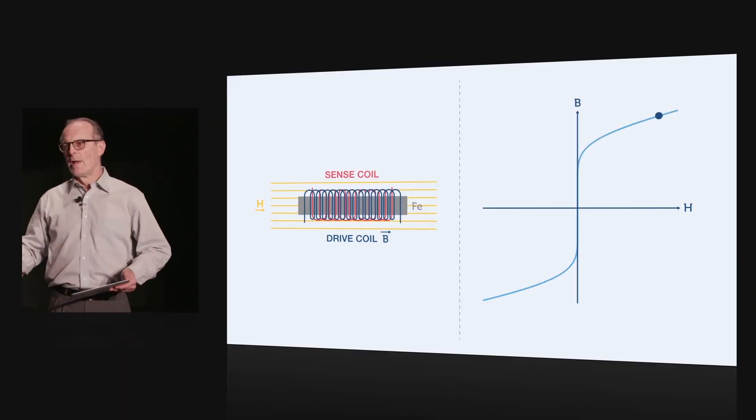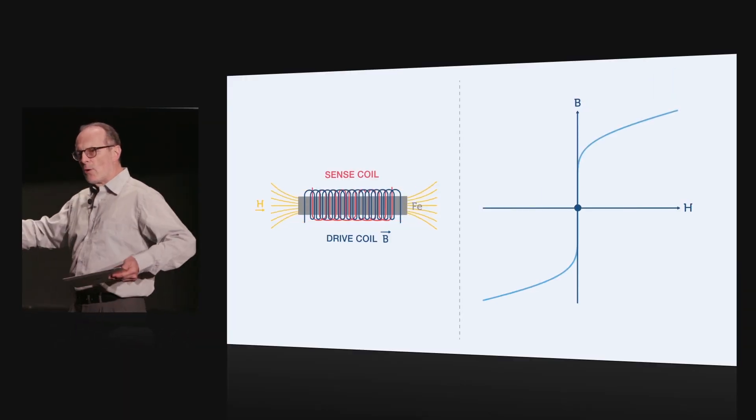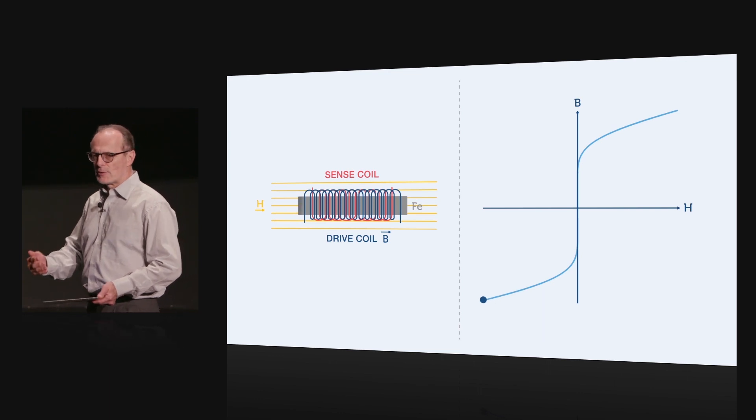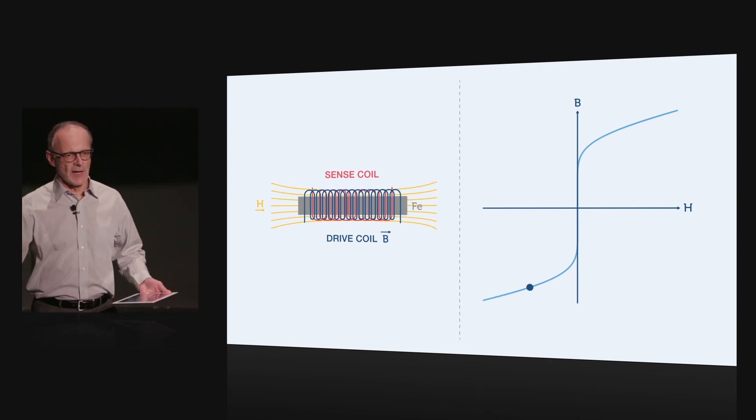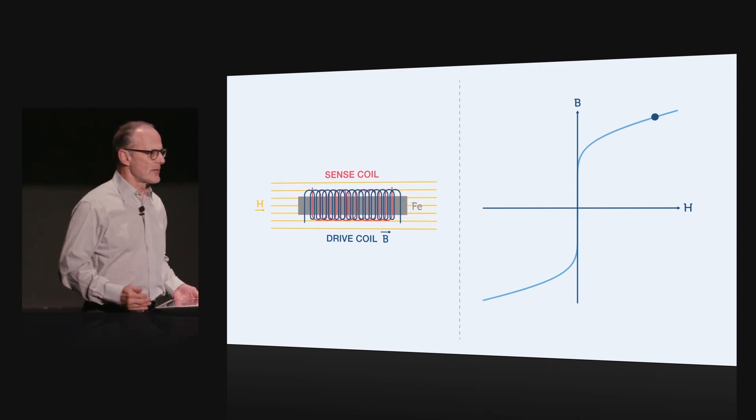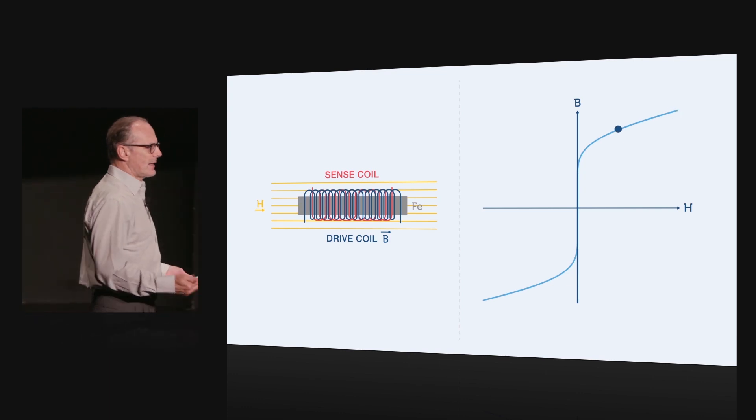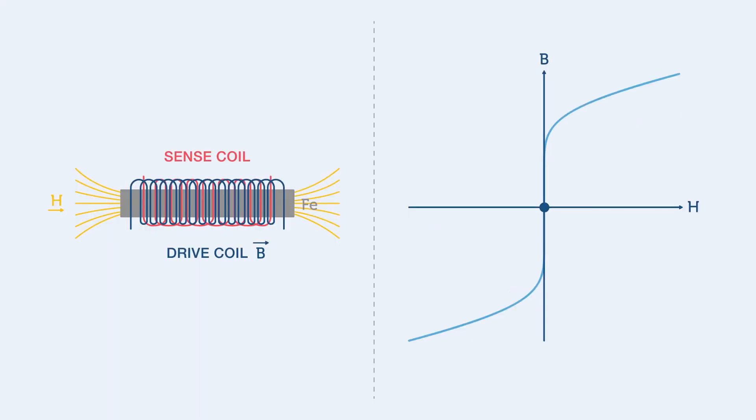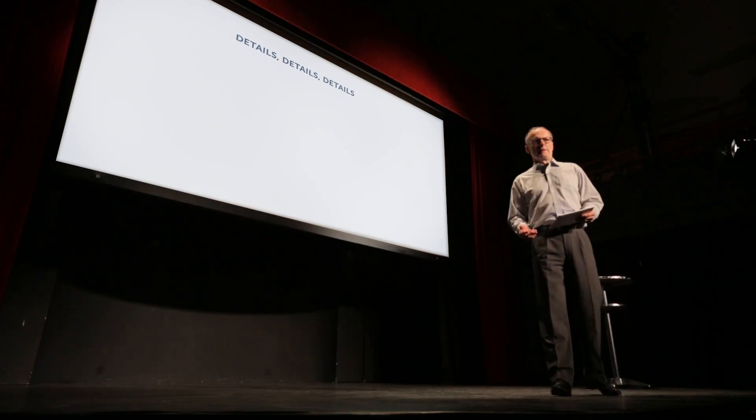The sense coil measures the inflow and outflow of the external flux as the iron goes into and out of saturation, and therefore can measure the flux density of the external field. Now, that's the basic idea, but to make a really good flux gate, there are lots and lots of details to manage.